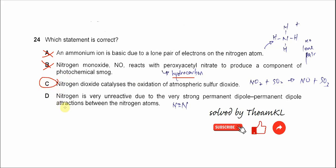D is wrong because nitrogen is very unreactive due to the very strong permanent dipole-permanent dipole attraction between the nitrogen atoms. So this is wrong. It's the strong N-N triple bonds, a covalent bond. So this one is wrong. The answer is C then.